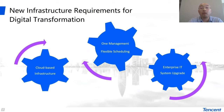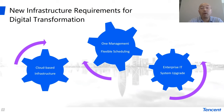And once we have these multi-cloud management systems, thirdly, we try to migrate enterprise applications to the cloud — sometimes we call it the upgrade of enterprise IT systems. So together: first, infrastructure should be based on cloud; second, we need a unified management module for flexible scheduling; third, we need to migrate and upgrade IT systems of the enterprise. These are the three main requirements of digital transformation.